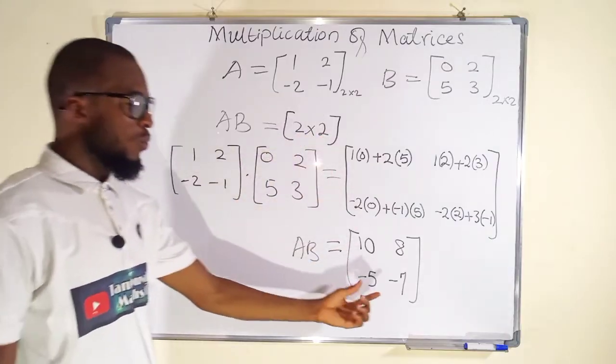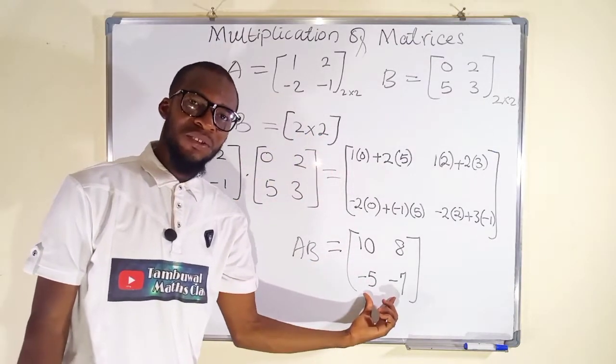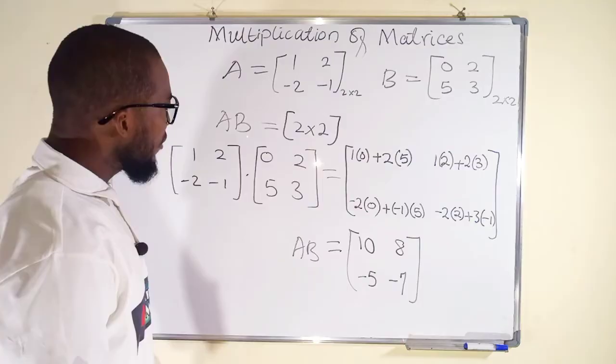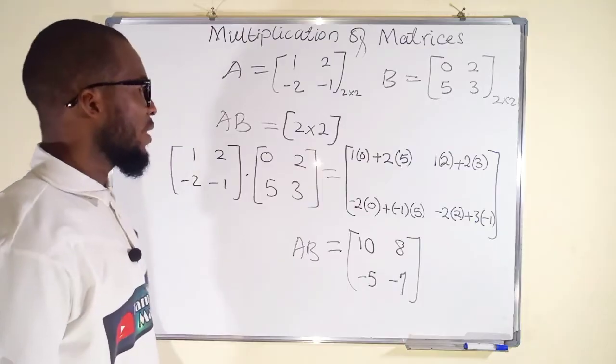After multiplying these two matrices together we obtain another 2 by 2 matrix, confirming that the order of the result is determined by the number of rows from the first matrix and the number of columns from the second matrix — 2 by 2.